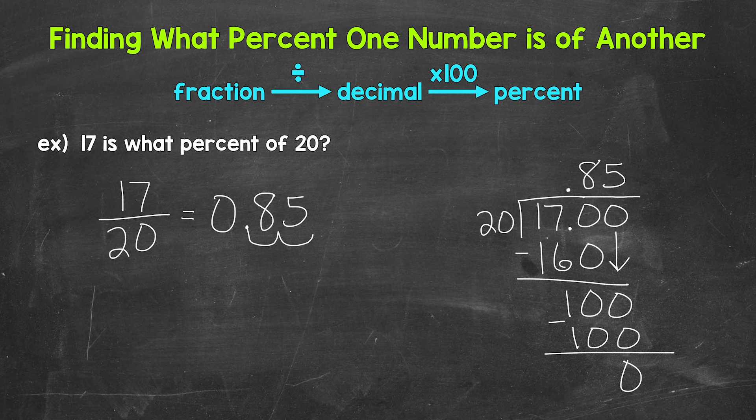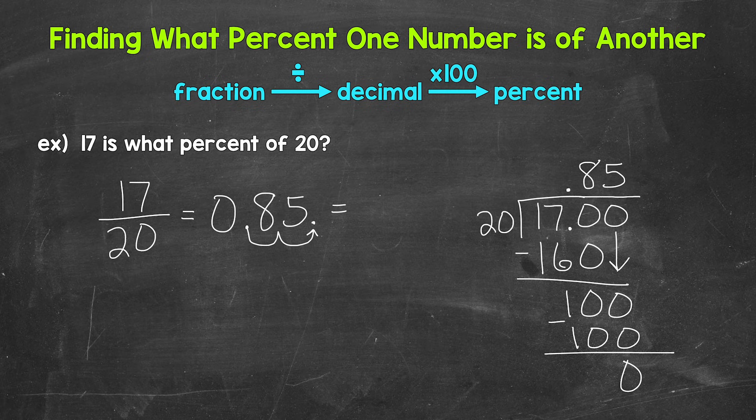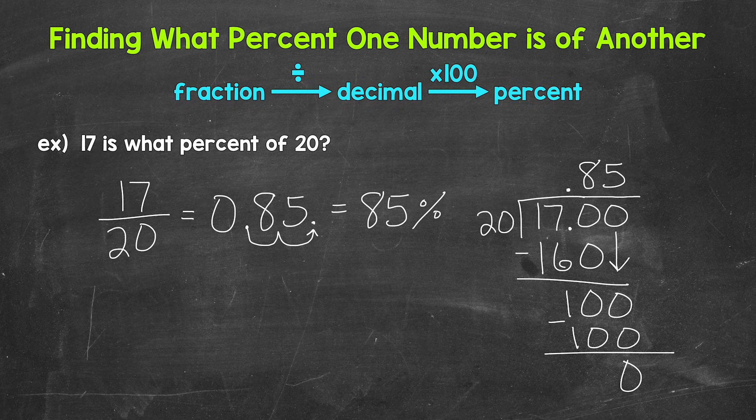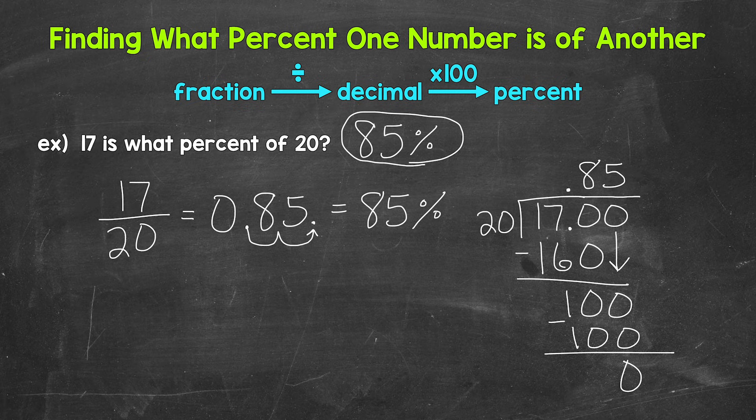So once, twice to the right. That gives us 85. 85 percent. So 17 is 85 percent of 20.